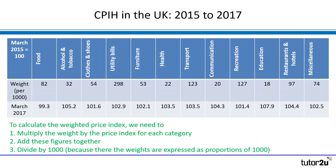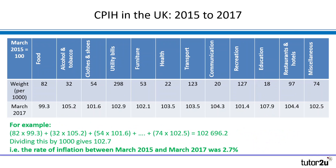The instructions are there at the bottom of the screen if you need to pause and read carefully. To calculate the overall weighted price index, we multiply the weight by the price index for each category, add them all together, and then divide by 1,000 because our weights are expressed as parts per 1,000. For example, the first column — food — is the weight 82 multiplied by the price index 99.3. The second column — alcohol and tobacco — is the weight 32 multiplied by 105.2, and so on through to the miscellaneous category. That gives us a figure which we divide by 1,000 to give us 102.7.